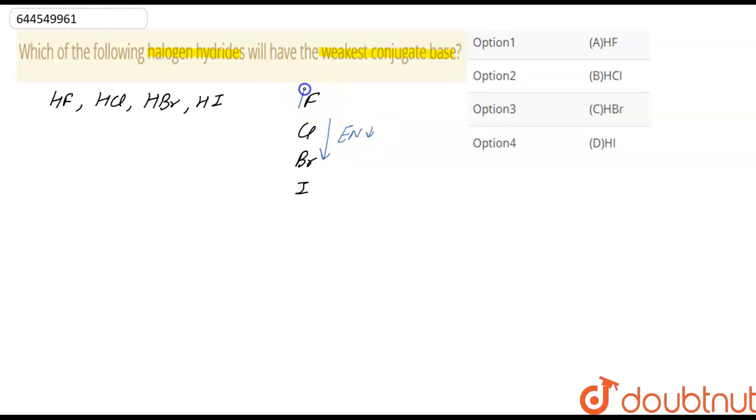That means fluorine is highly electronegative, then chlorine, bromine, and iodine. Now the hydride of iodine, that is hydrogen iodide,